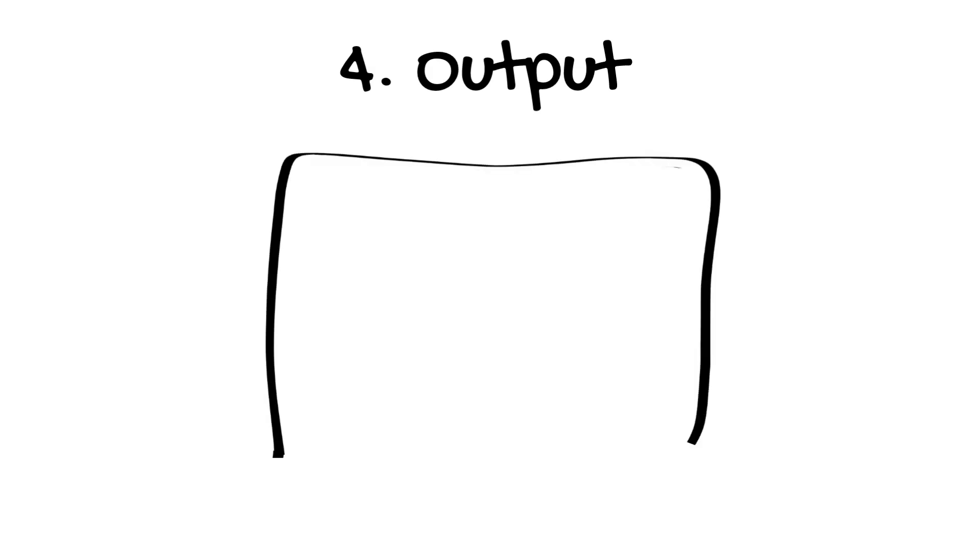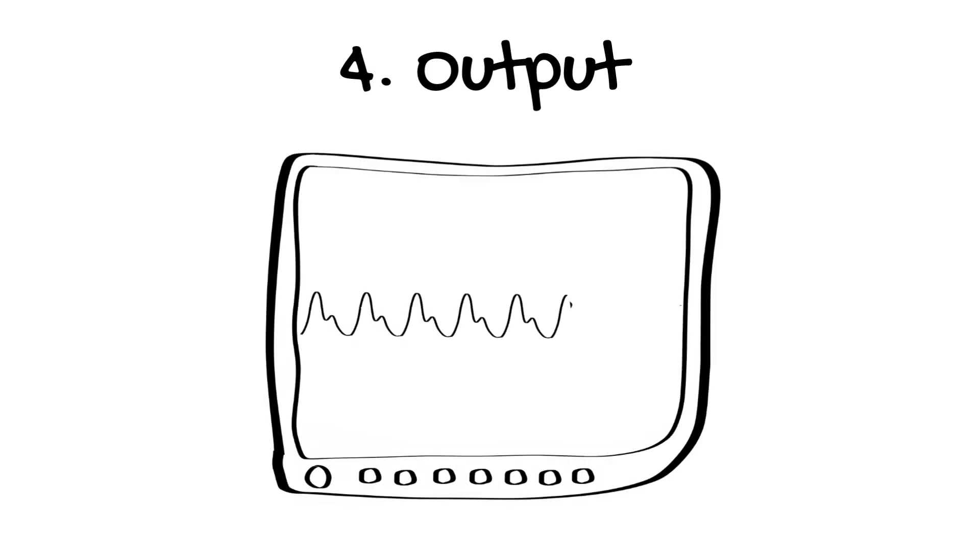The final part of the monitoring system is the output. In this case, it is a graphical representation of the arterial blood pressure waveform with time and a numerical display.